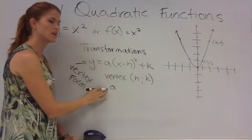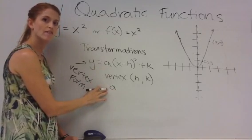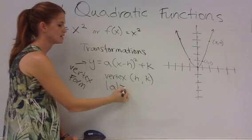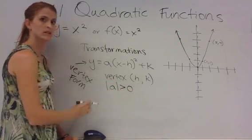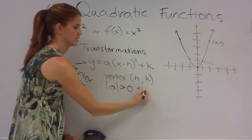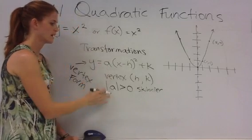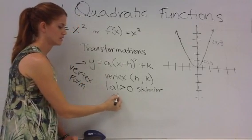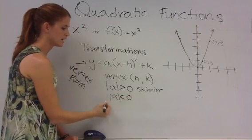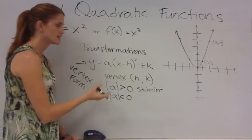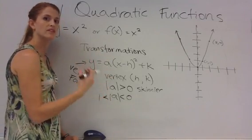The a value here is going to make your graph fatter or skinnier. If the absolute value of that a is greater than zero, then your graph is going to get thinner. If this value is between zero and one, in other words it's a fraction of some kind, it's going to make your graph fatter.